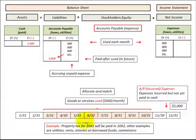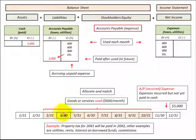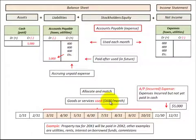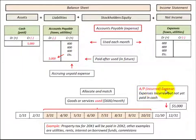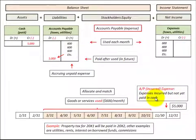Looking at this time frame here — a March through October monthly period — we've had some goods or services that we've used and consumed. Just for example, I used $600 per month for those services. So we have an accounts payable, which is an incurred expense — expenses that we've already used but not yet paid in cash. We didn't pay any cash for these services that we used.